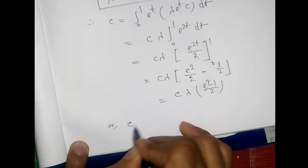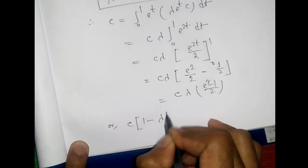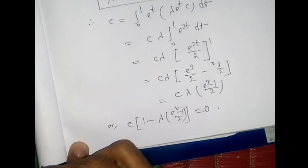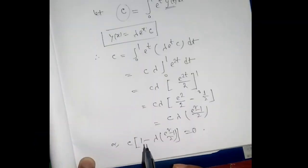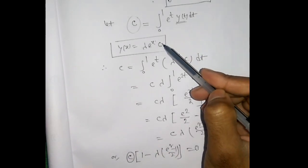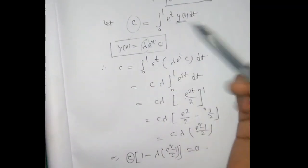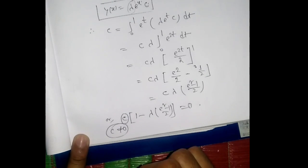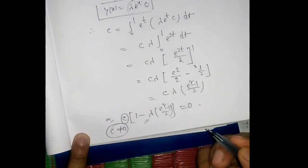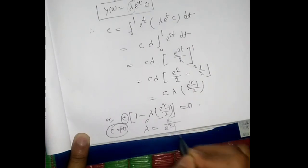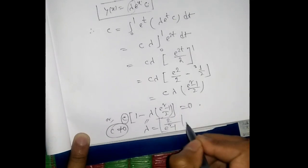Taking both sides, we get: 1 - λ(e² - 1)/2 = 0. For non-zero solutions, C must not be zero, so C ≠ 0. Therefore, the eigenvalue is λ = 2/(e² - 1).